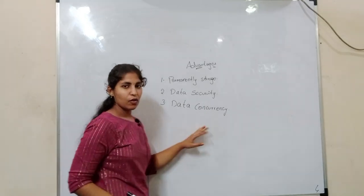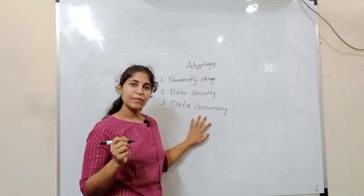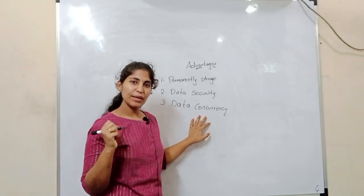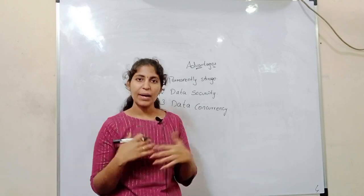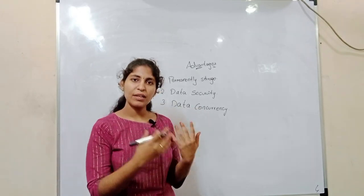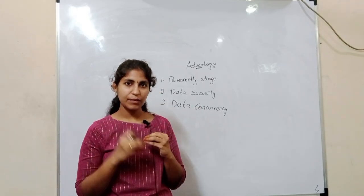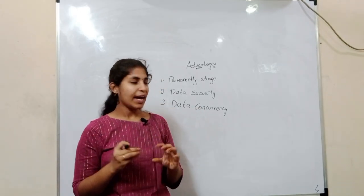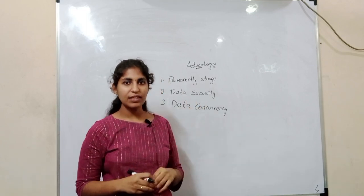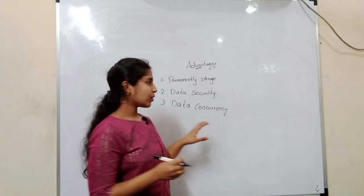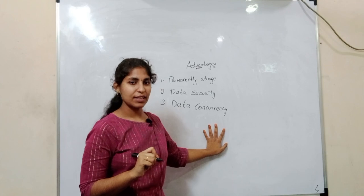The third advantage is data concurrency. This means at a time a large number of users can fetch the data simultaneously. Parallelly, some other person can also fetch the same data at the same time. Data concurrency supports this in our database, allowing us to fetch data easily.